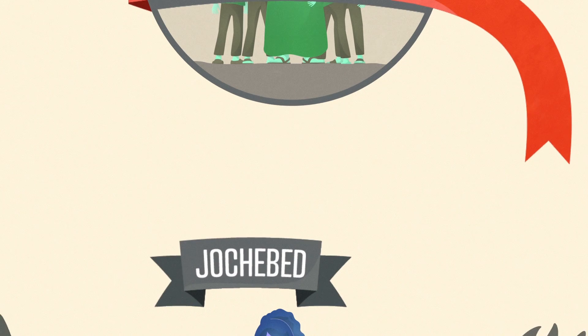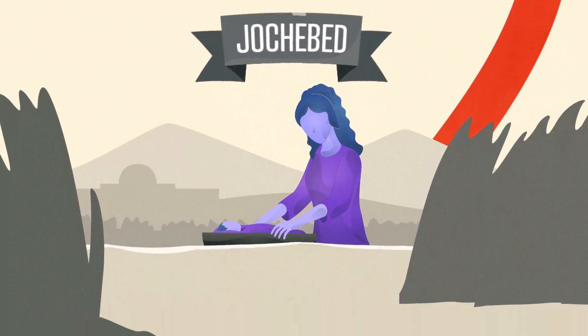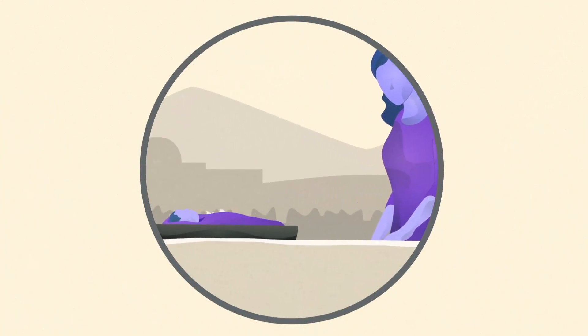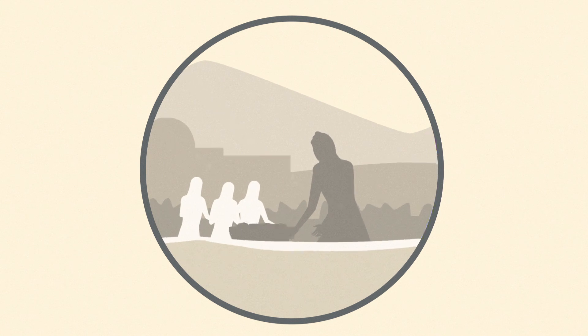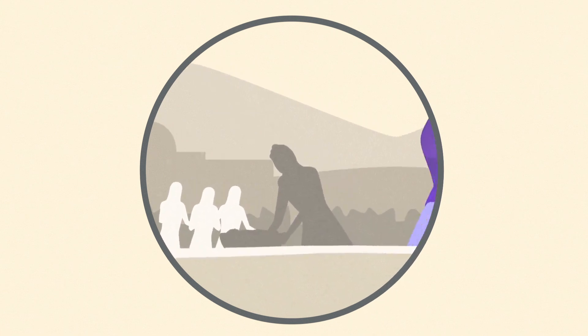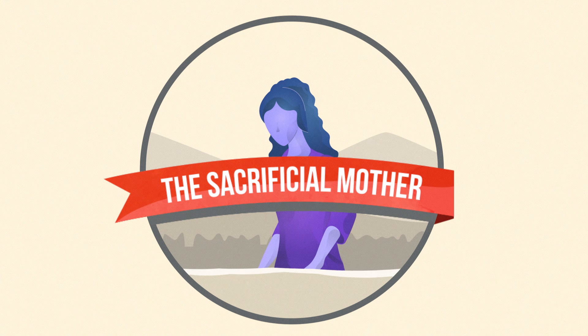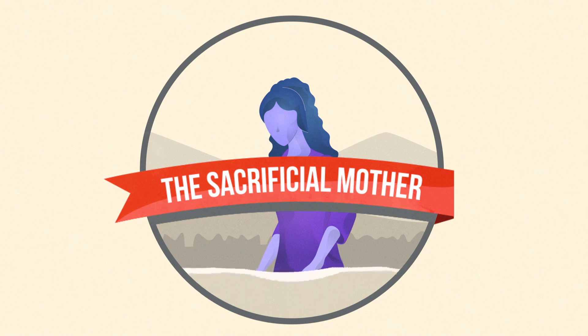When Pharaoh became angry at the fruitfulness of the Hebrews, Jochebed sacrificed her motherhood for the sake of her son. When Pharaoh's daughter saw the child, she had compassion on him. Because of Jochebed's sacrificial motherhood, the Israelites found freedom.